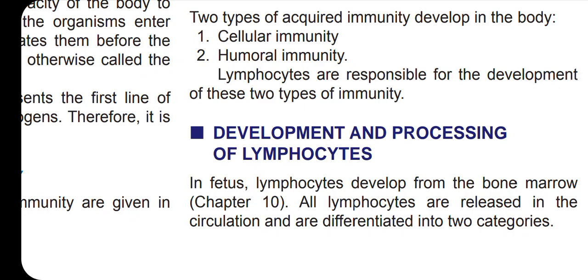If we look at immunity — innate immunity and acquired immunity — the innate immunity is always present. The pathogen is against the body, the physical resistance, the defense mechanism — that is immunity. Those are the two types: innate and acquired.